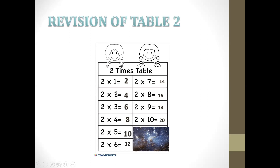Two times six equals twelve. Two times seven equals? Eighteen. Two times eight equals? Sixteen. Two times nine equals eighteen. Two times ten equals twenty.